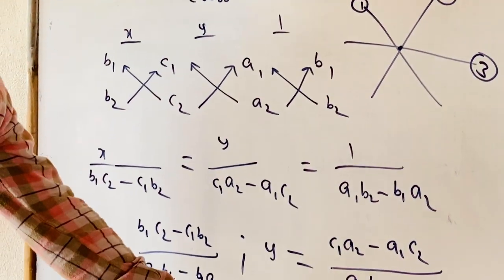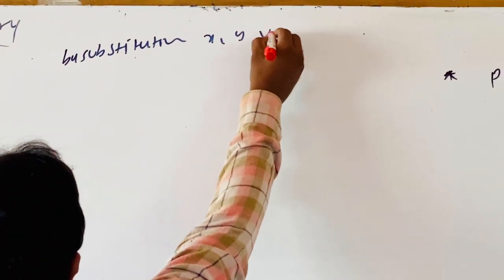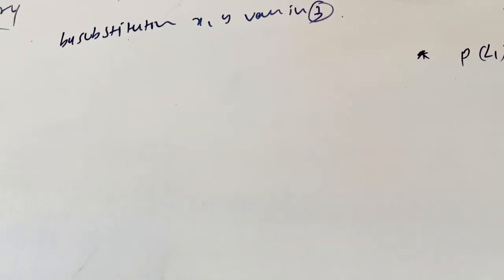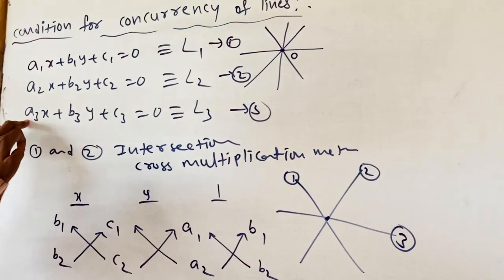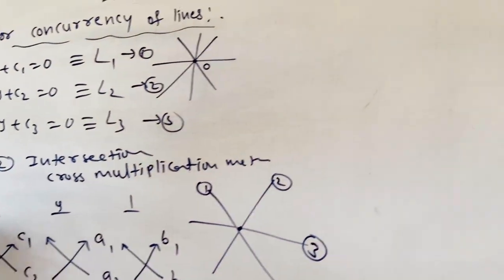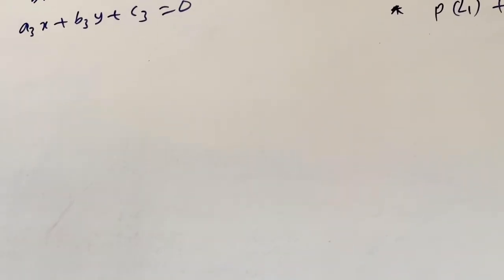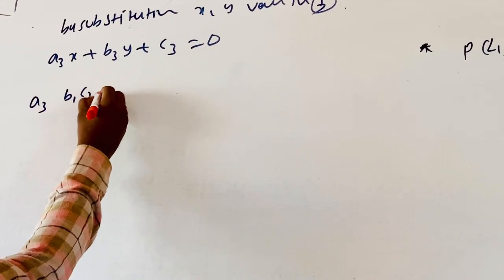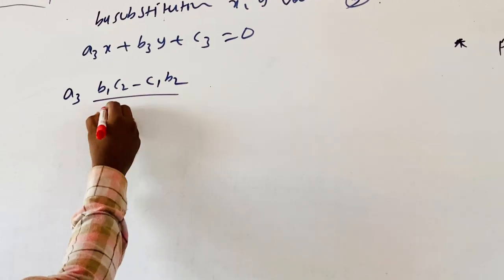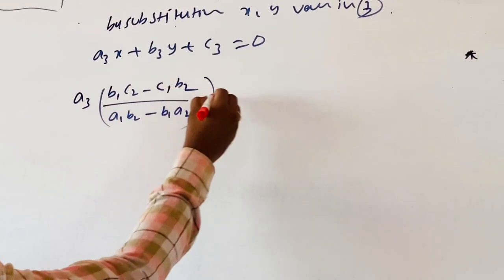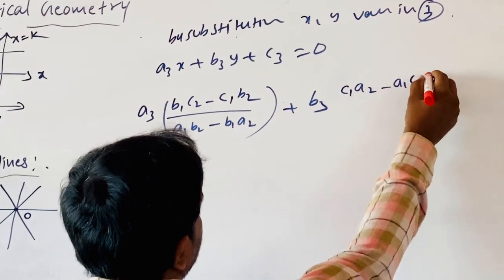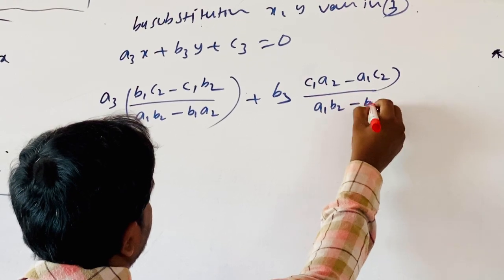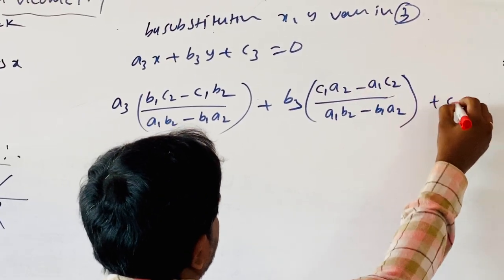We already got the X and Y values by the cross multiplication method from equations 1 and 2. Substituting into equation 3: A3 · (B1·C2 − C1·B2) / (A1·B2 − B1·A2) + B3 · (C1·A2 − A1·C2) / (A1·B2 − B1·A2) + C3 = 0.